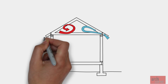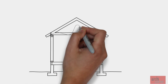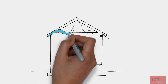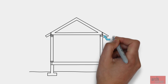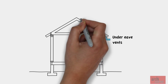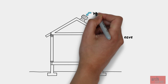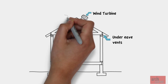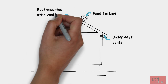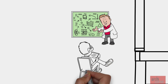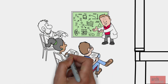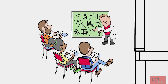However, if we added venting on the other side, it would create the cross ventilation that we are looking for. There are different types of vents installed in different roof locations. For example, we have under-eave vents, wind turbines, and other types of attic ventilators. The point is to provide vents in such a way that there is cross ventilation.